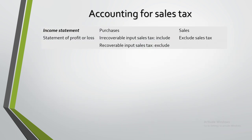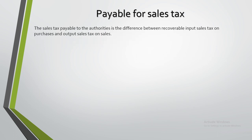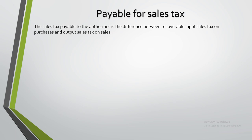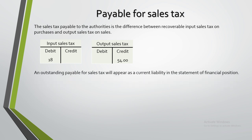In conclusion, sales tax should be excluded from the statement of profit and loss, except if the business is not registered as a sales tax payer. In this case, it is not recoverable and should be added to the cost of sales. At the end, let's see how sales tax will be shown in the statement of financial position. The sales tax payable to authorities is the difference between recoverable input sales tax on purchases and output sales tax on sales. An outstanding payable for sales tax will appear as a current liability in the statement of financial position.